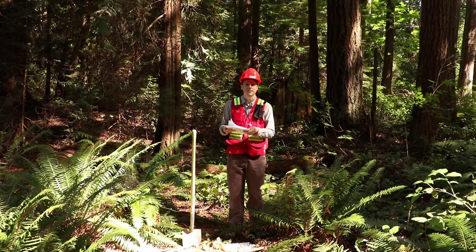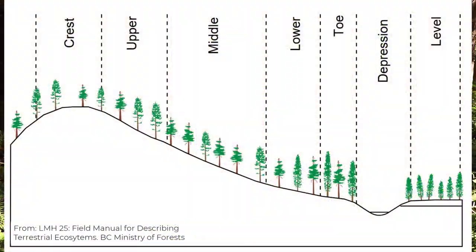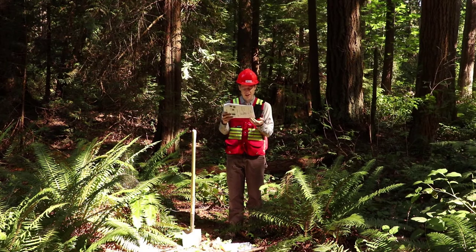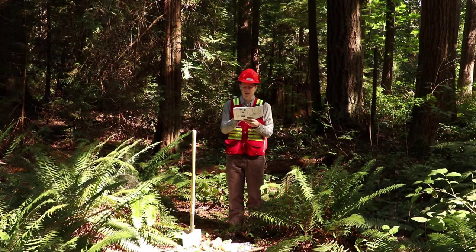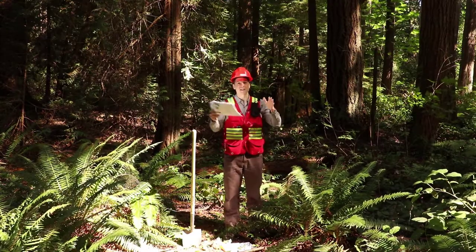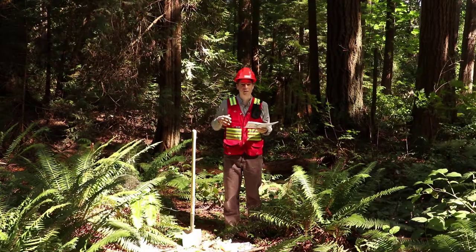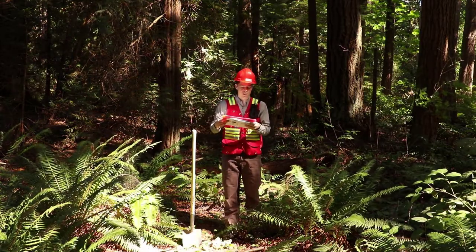In your field guide there's a diagram showing different slope positions — crest, upper, middle, lower slope, toe slope, and also level or depression. In this case, we're on a level slope: any level misoscale area not immediately adjacent to a misoscale slope. It's quite level all around here, so I don't imagine there will be any influence of slope position on this site. On our datasheet, for slope position, we're going to mark flat.